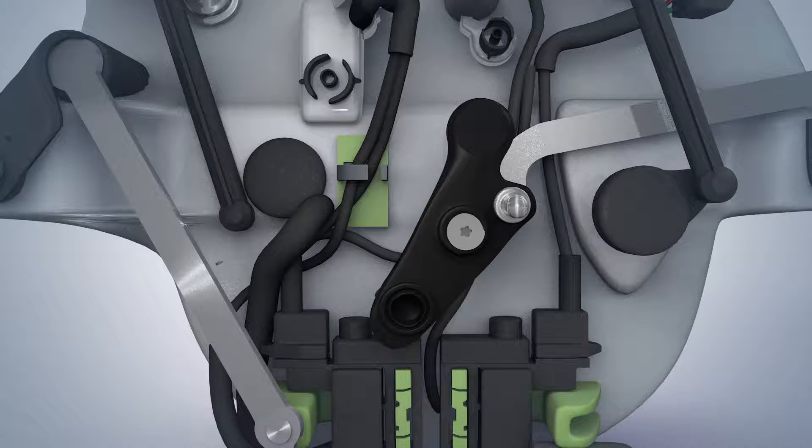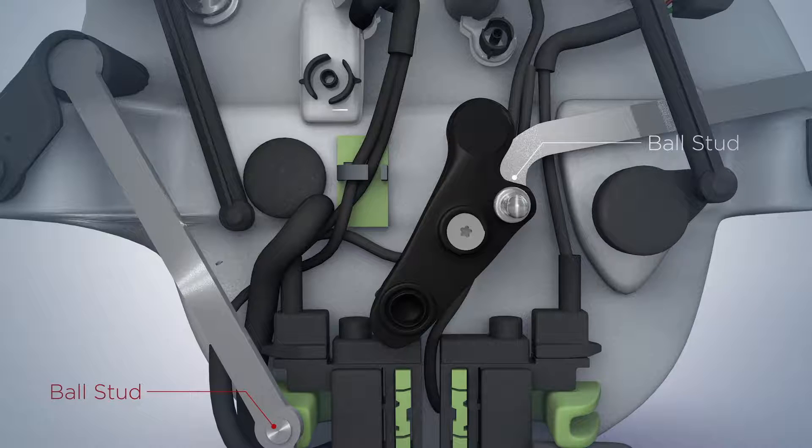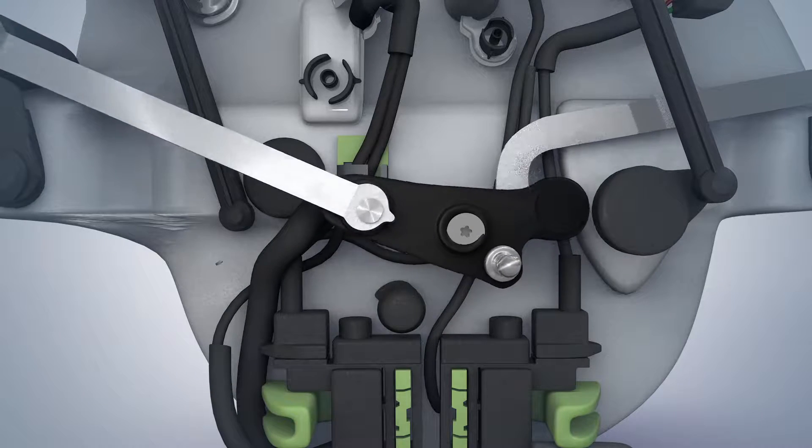Put a small amount of silicone grease onto the ball studs of the right and left connecting levers, and snap them into place on the central pivot lever.